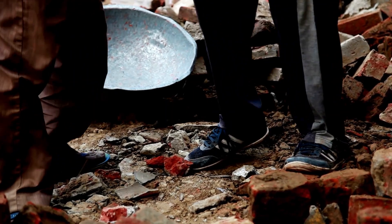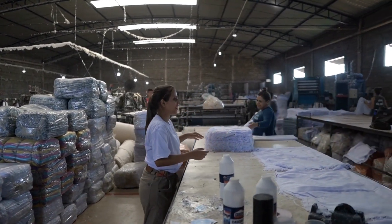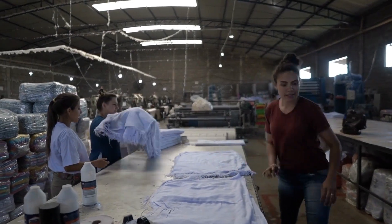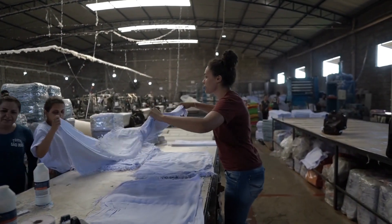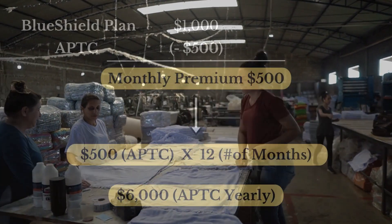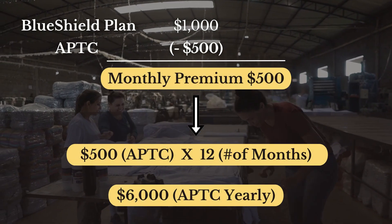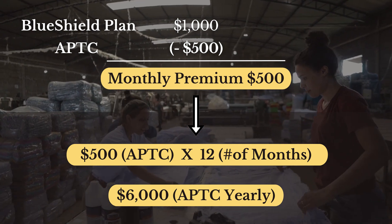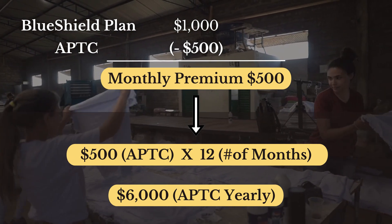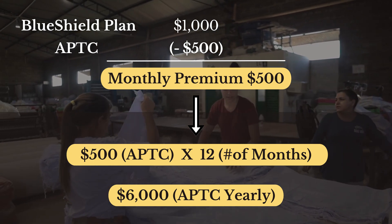Exchanges don't actually provide insurance coverage — they pay private insurance plans like Blue Shield, Kaiser, Molina, or Humana to do it. For example, if you choose a Blue Shield plan with a monthly cost of $1,000, the exchange might determine $500 is affordable for your family. The exchange pays Blue Shield $500 a month, you pay $500 a month, and Blue Shield gets $1,000 total for your health insurance plan.